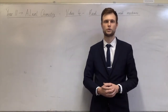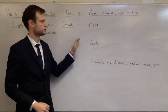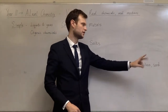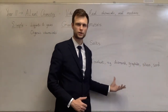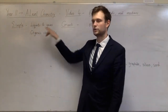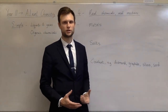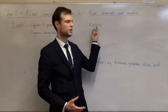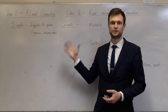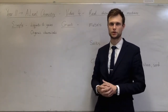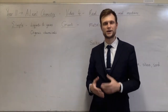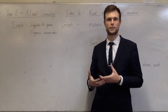In GCSE you split things into giant and simple. For giant structures you've got metals, salts, and a few covalent things - diamond, graphite, silicon, sand - those are the giant covalent substances. Then you have simple covalent substances, which tend to be liquids and gases. Metals and salts tend to be solids - the only exception I can think of is mercury, which is a liquid metal. Organic chemicals from biology are made from simple covalent substances with a fixed number of atoms, some large and some small.